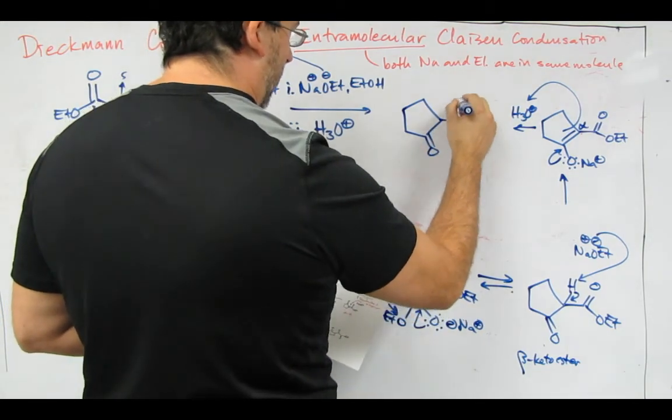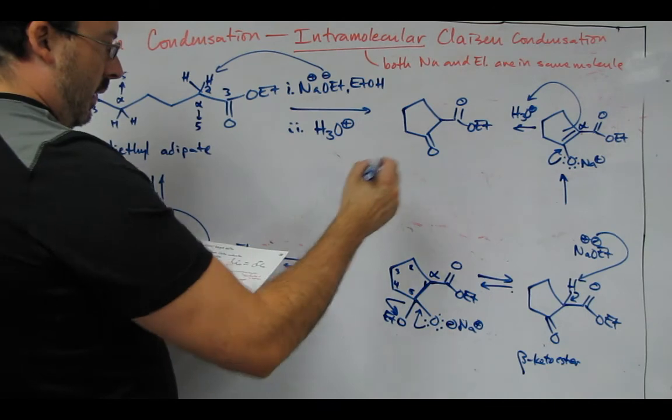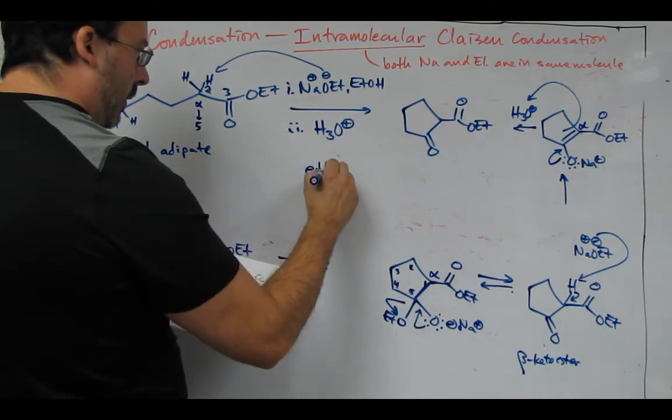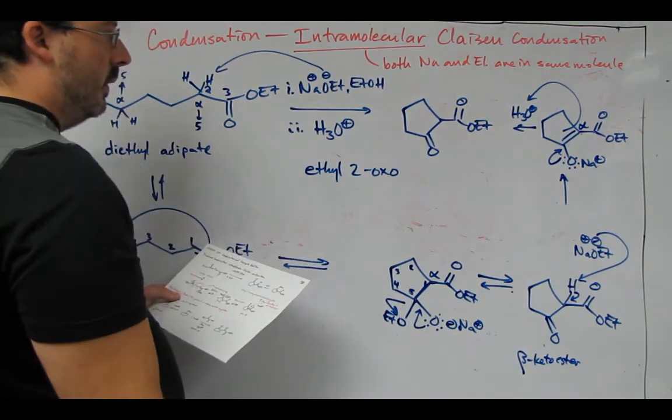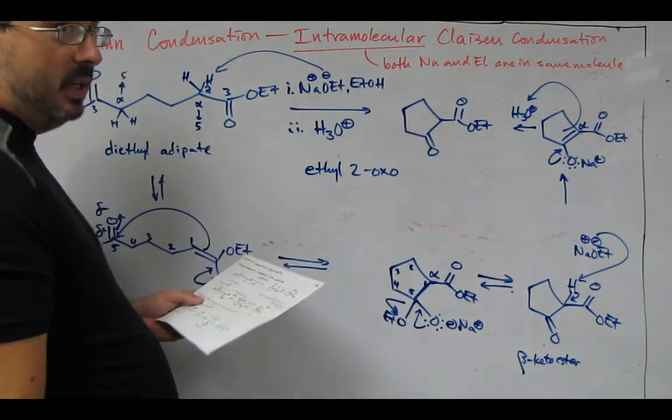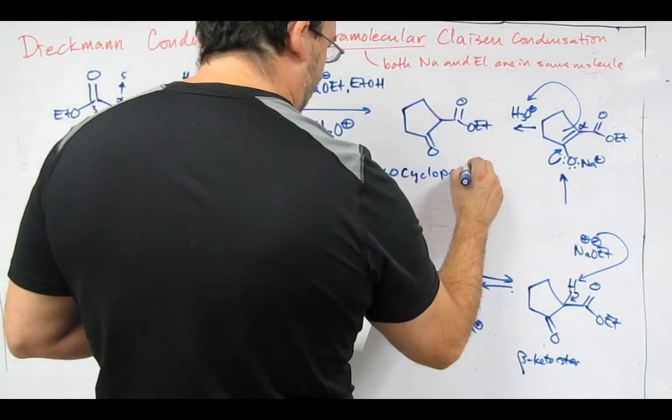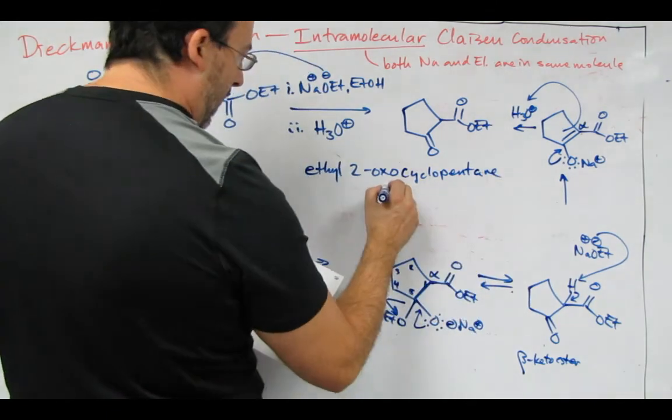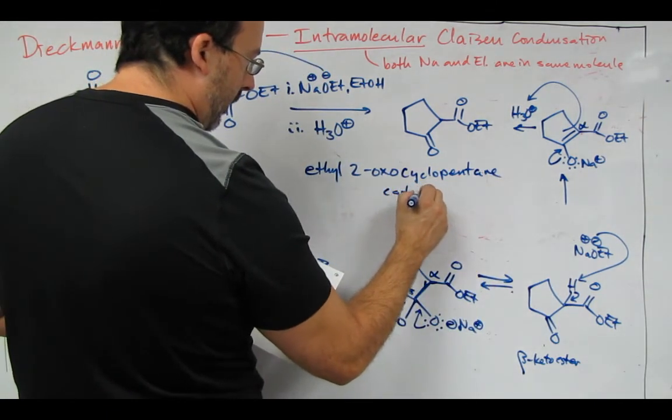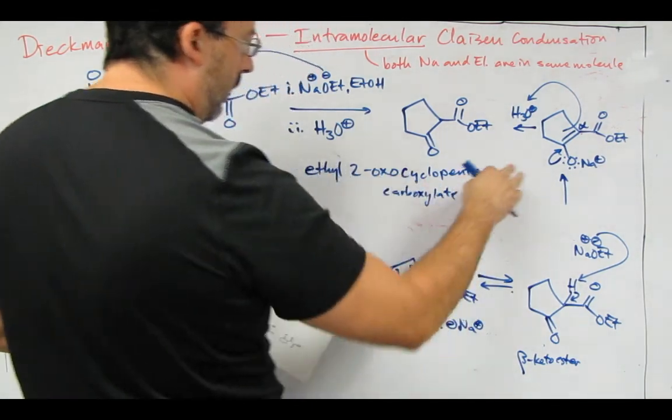So the name of this molecule is ethyl 2-oxo. So that's how we name a carbonyl in the ketone substituent. Cyclopentane, and then carboxylate. So that would be all one word. I ran out of room.